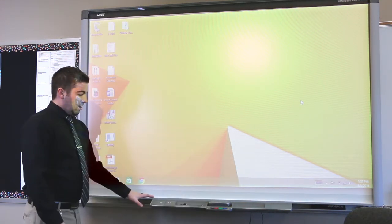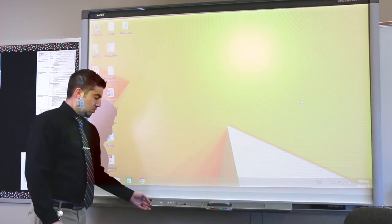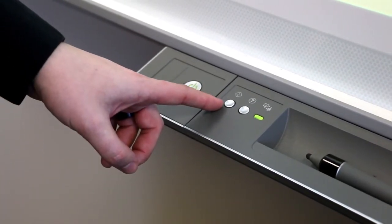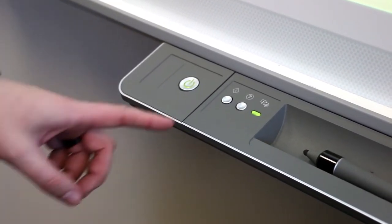So the basic functionality of the board starts with the pin tray. You have your power button, you have your quick calibration button, and then you have your advanced troubleshooting menu button.